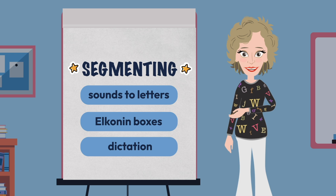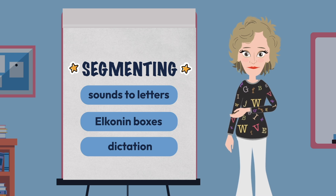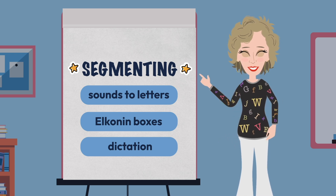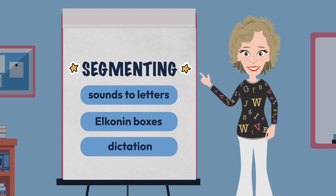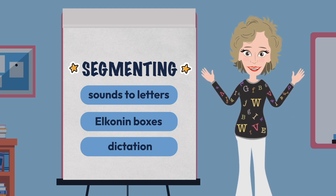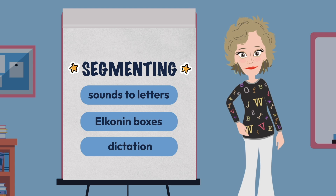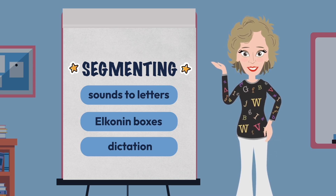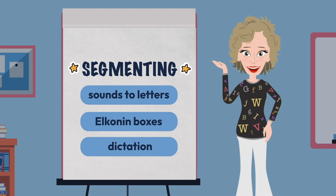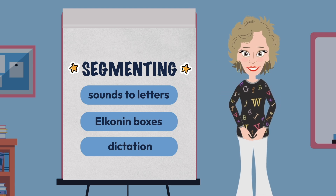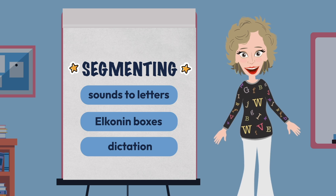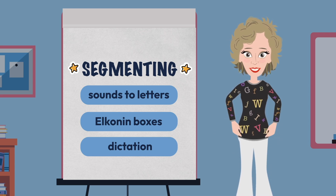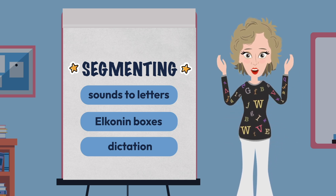Dictation is a strategy that has been around a long time, but typically as part of a spelling assessment. Now it is being used as a structured practice activity — hearing words, segmenting the sounds, and then writing the letters that correspond with the sounds. This is a quick and easy way for kids to practice segmentation. And when done as a group activity on the floor or around a table with dry erase boards and collaborative conversation, oh my!